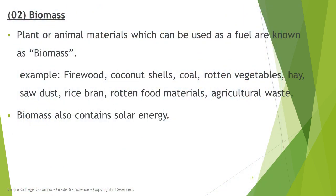Now let's see what is biomass. Plant or animal materials which can be used as a fuel are known as biomass. Examples include firewood, coconut shells, coal, rotten vegetables, hay, sawdust, rice bran, rotten food materials and agricultural waste. Biomass also contains solar energy, because during photosynthesis plants absorb sunlight and store solar energy. As animals are heterotrophic and depend on plants directly or indirectly, animals also contain solar energy — that's why biomass contains solar energy.